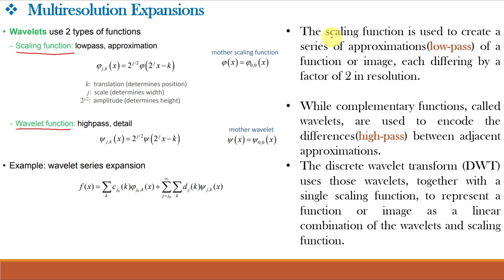Wavelets use two types of functions: the scaling function and the wavelet function. The scaling function is used to create a series of approximations of a function or image, each differing by a factor of 2 in resolution, as we already understood in previous video classes. The complementary functions of scaling functions, called the wavelet functions, are used to encode the differences between adjacent approximations, giving high-pass details. The DWT or Discrete Wavelet Transform uses these wavelet functions together with a single scaling function to represent a function or image as a linear combination of wavelets and scaling functions. For example, the Wavelet Series Expansion is given by a combination of two equations.